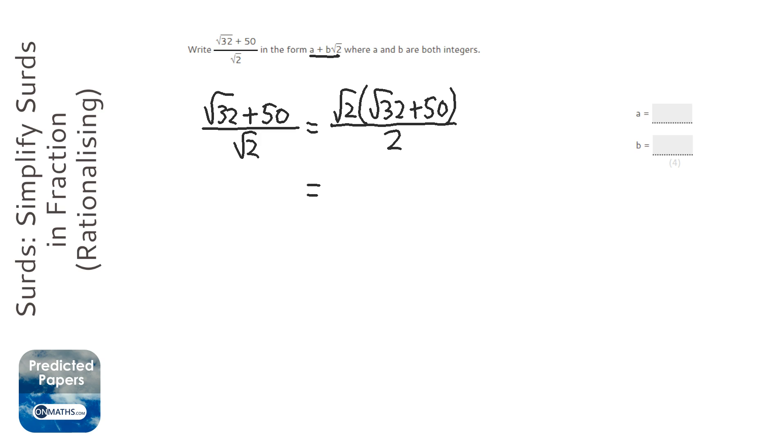Then I expand the brackets. So that's going to be square root 64. Because with surds, if you time surds, you can just times the numbers and keep it in a square root. Plus 50 root 2. And obviously that's still over 2.